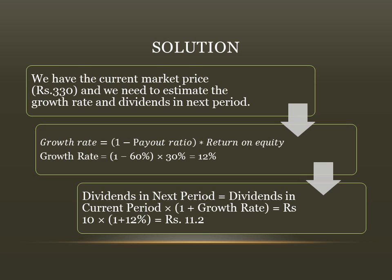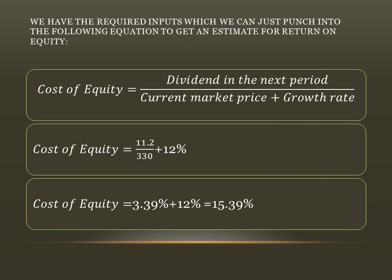Growth rate equals one minus payout ratio, multiplied by return on equity. Growth rate equals one minus 60 percent, multiplied by 30 percent, that is 12 percent. Dividend in the next period equals dividend in the current period multiplied by one plus growth rate, that is rupees 10 multiplied by one plus 12 percent, equals rupees 11.2. Cost of equity equals rupees 11.2 divided by rupees 330, plus 12 percent, equals 3.39 percent plus 12 percent, that is 15.39 percent.